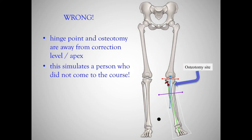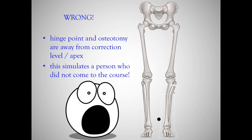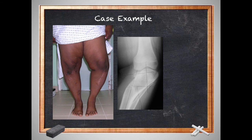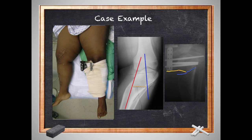What if the hinge point and osteotomy are both away from the apex? This pretty much simulates someone who didn't go to the course, and you can see this crazy deformity that is not uncommon, especially in Blount's treatment. This is a large young man at one of my mission hospitals — someone with good intentions tried to correct the deformity but instead created a double deformity: a varus, a valgus, and an extremely large translational deformity. These can be very challenging to correct — you have to translate the bone over 50% and account for the peroneal nerve and other factors. So you want to follow the rules.